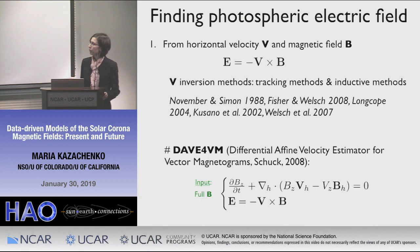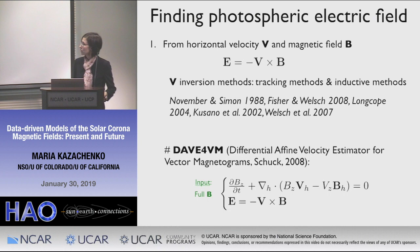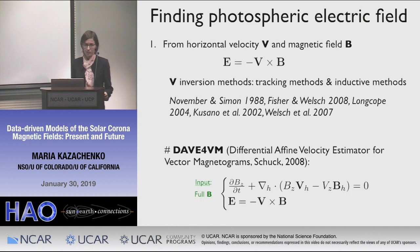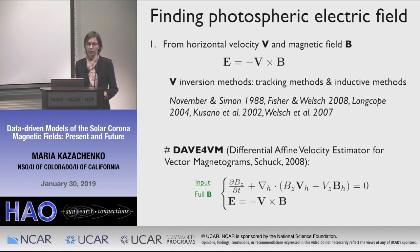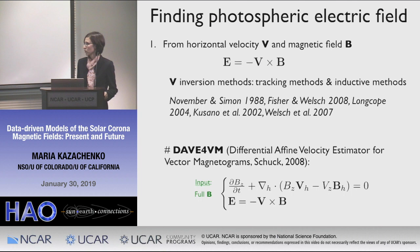One approach for finding electric fields is to get them from horizontal velocity V and magnetic field B as E = −V × B. The problem then reduces to how do we get the velocity. Historically, the first attempts used local correlation tracking and inductive methods. One of the most popular approaches is the DAVE4VM method — differential affine velocity estimator for vector magnetograms — developed by Pete Schuck in 2008. An important thing: this method uses the full vector magnetic field without any extra information like Doppler velocity. It basically tries to solve the vertical component of the induction equation, with Bz and Bh known, finding Vz and Vh, and then derives the electric field.